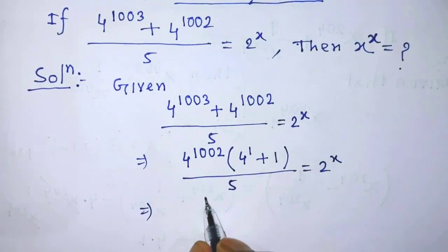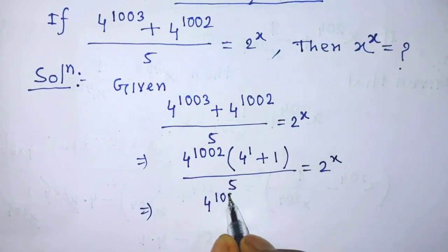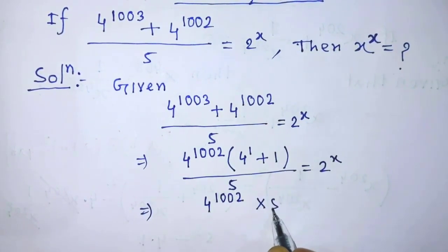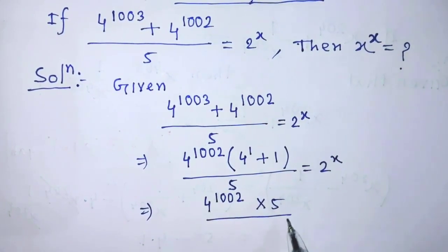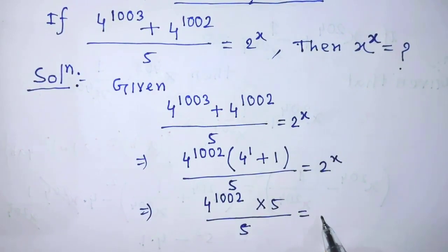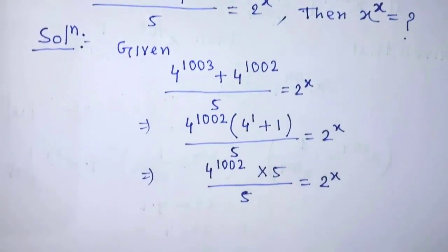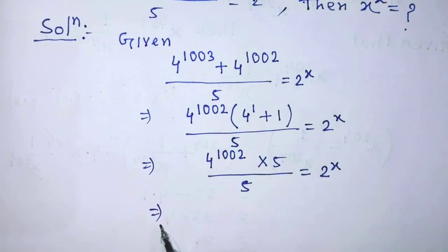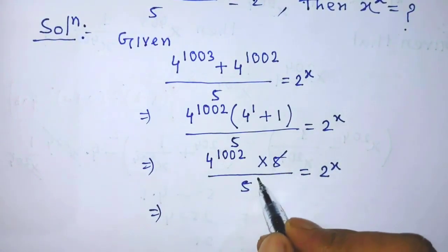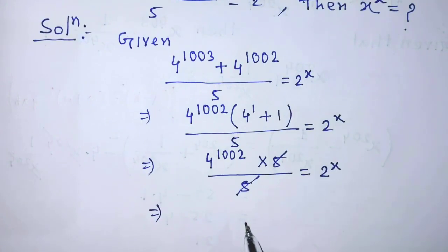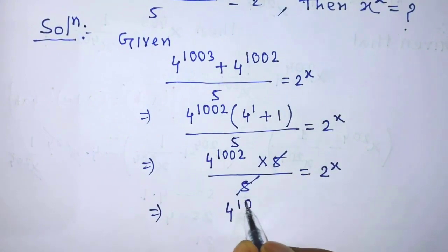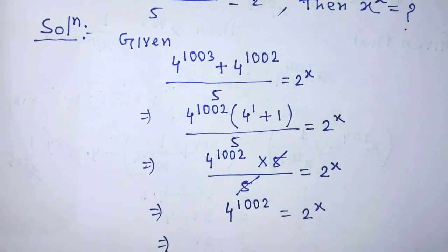On the left hand side, we get 4 to the power 1002 times 5, over 5, is equal to 2 to the power x. The 5s cancel, so 4 to the power 1002 is equal to 2 to the power x.